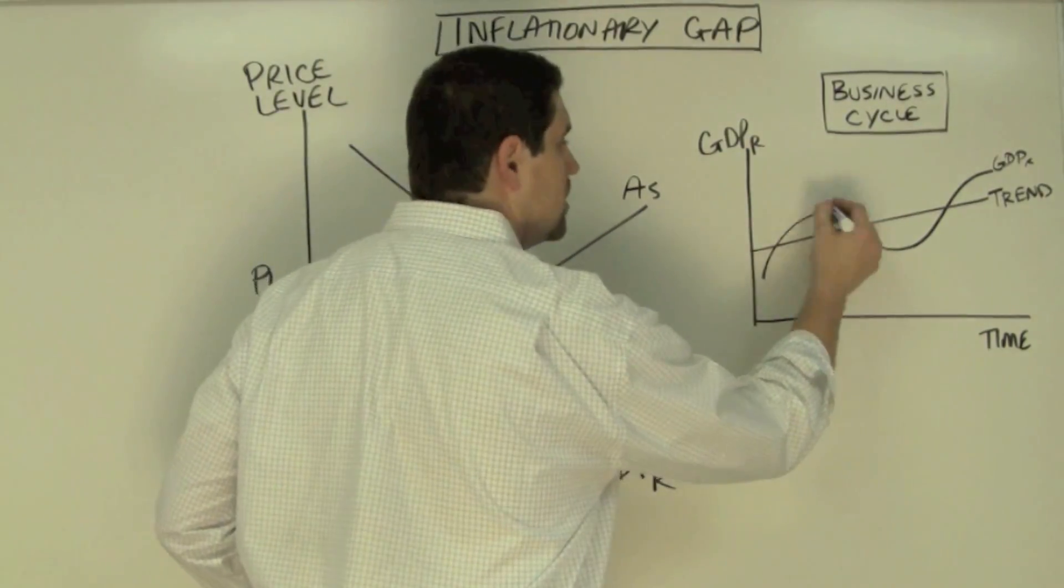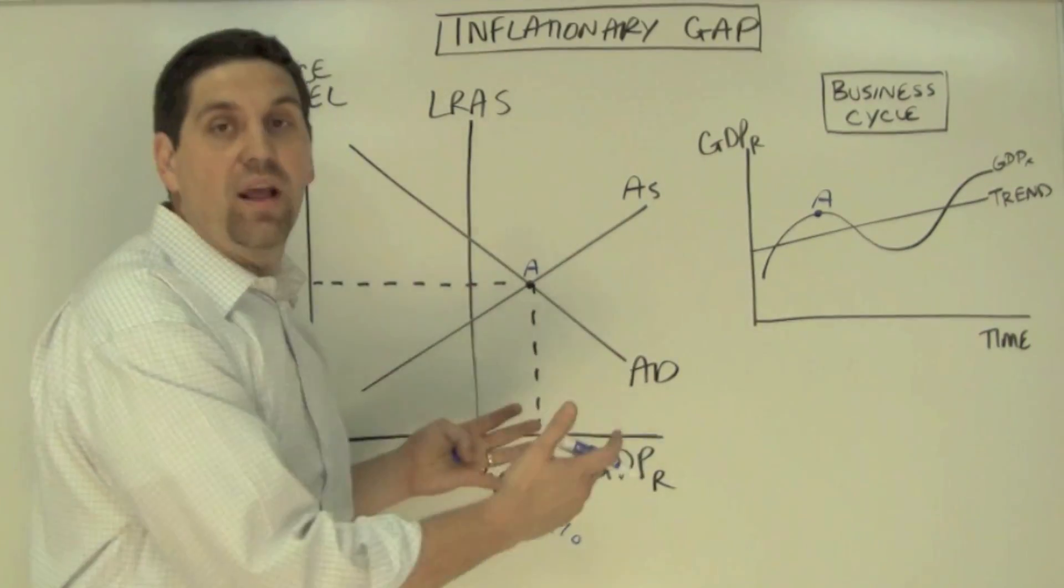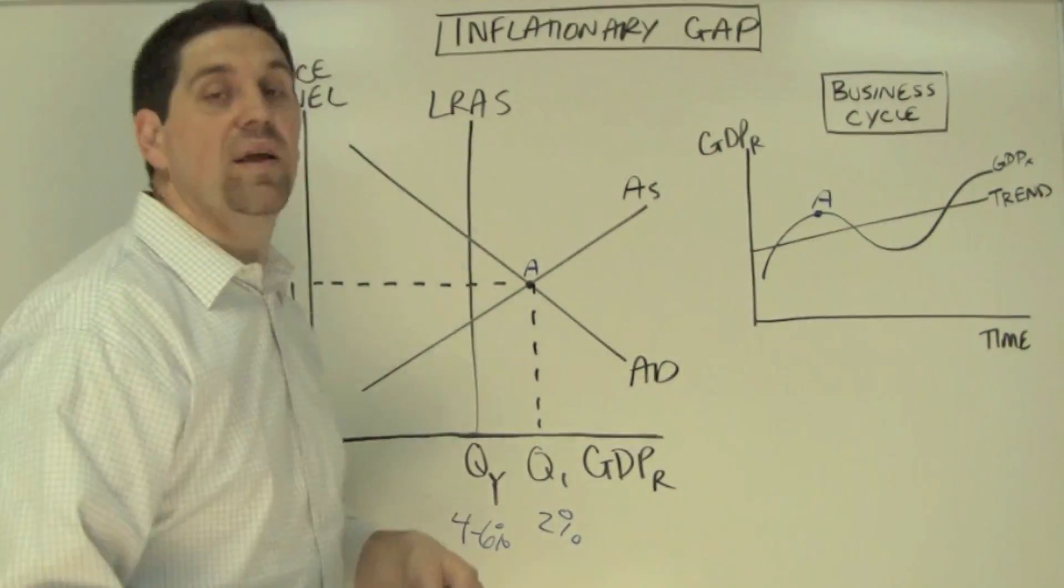Well, it's got to be right here. So it's also called as point A. Now this looks great, it looks like we have this great economy, but there's a problem here. The problem is inflation.